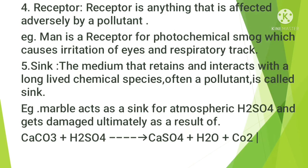The next term is receptor. A receptor is anything that is adversely affected by a pollutant. For example, humans are the receptor for photochemical smog, which causes eye irritation and respiratory attacks. Fish are the receptor for dieldrin. Plants are the receptor for oxides of sulfur — when exposed to SO₂ or SO₃, the photosynthesis process stops and the plant dies.